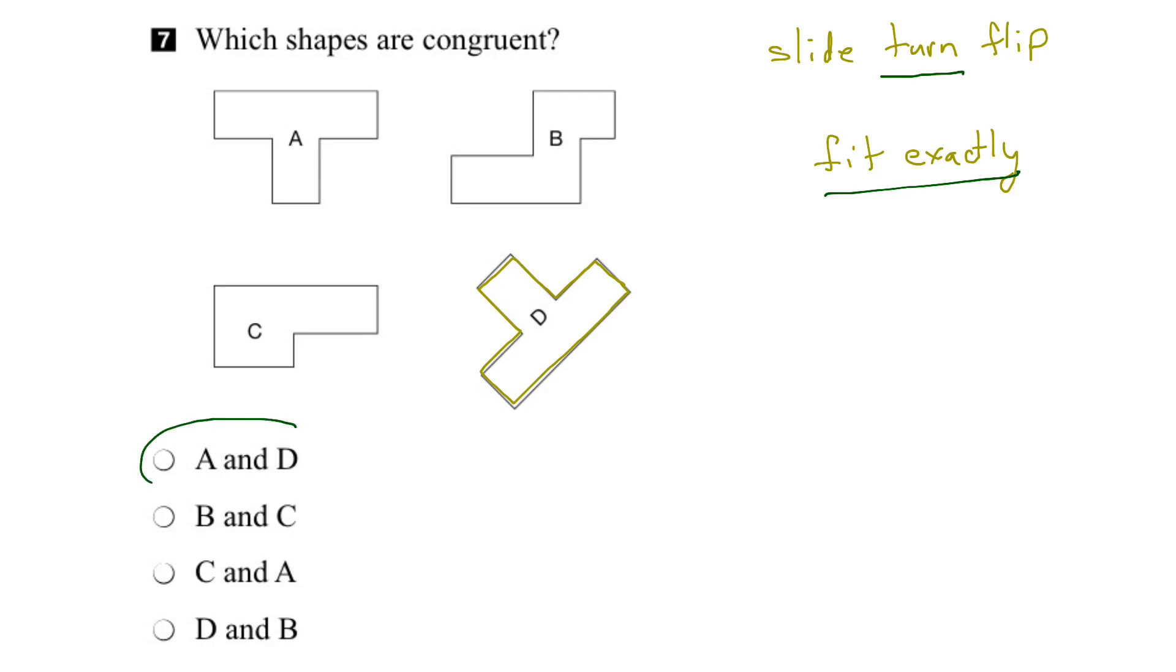That means that A and D are congruent. So we have our answer right off the bat, A and D are indeed congruent. But let's make sure there aren't any other shapes that are congruent.